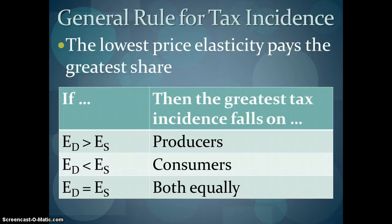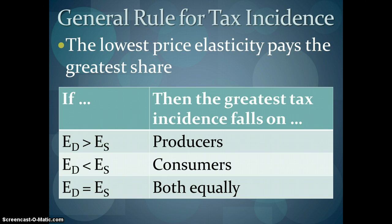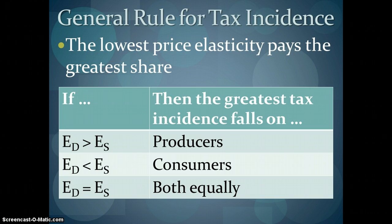The general rule for who pays the greater portion of an excise tax is basically who has the highest elasticity. If you have a lower price elasticity — if you're more inelastic — then you're going to pay the greater share of the tax incidence. The more elastic you are relative to the other side, the less of a tax burden you have. The more inelastic you are, the more of a tax burden you will carry.